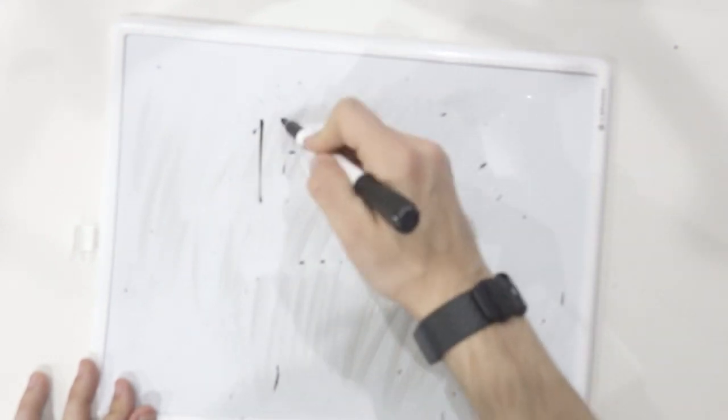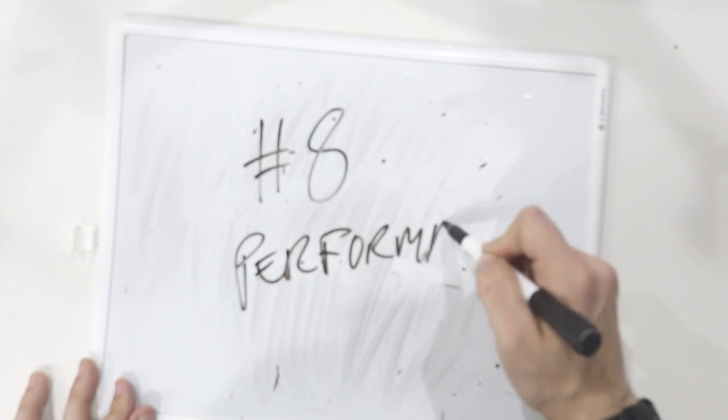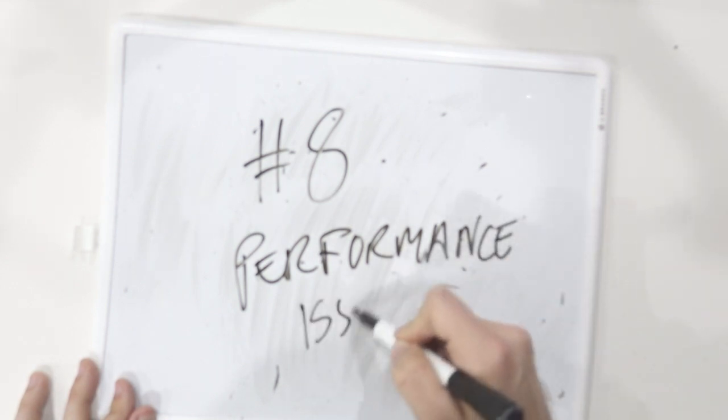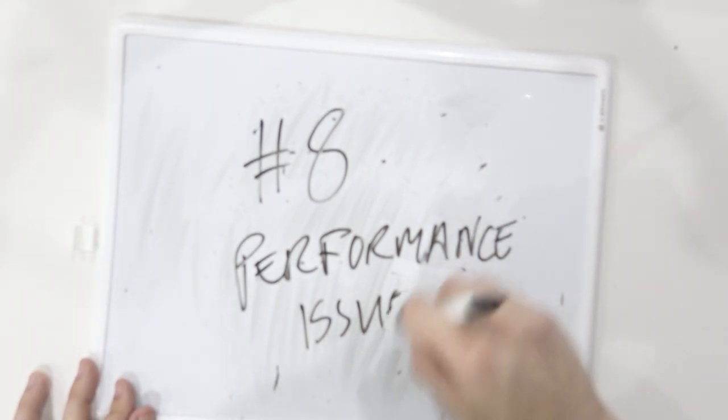Number eight, performance issues. This one's all about poor execution. Whether it's a product issue, a support issue, a services snag, if you're not executing well your customers pay the price. And then you do when the renewal comes up. Telltale signs you see an increased volume of unresolved support tickets or escalations.